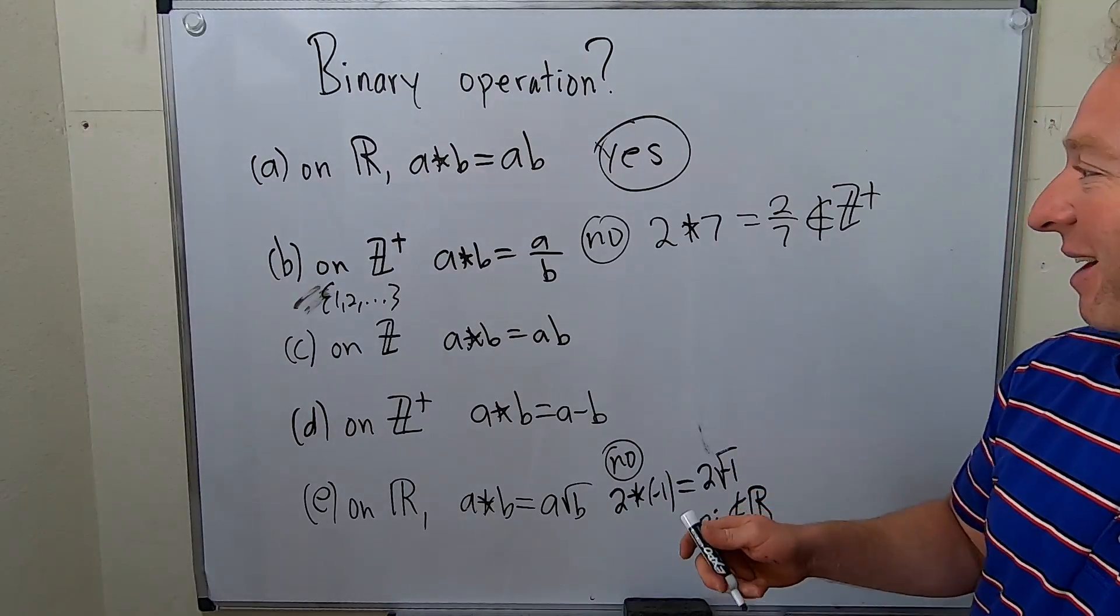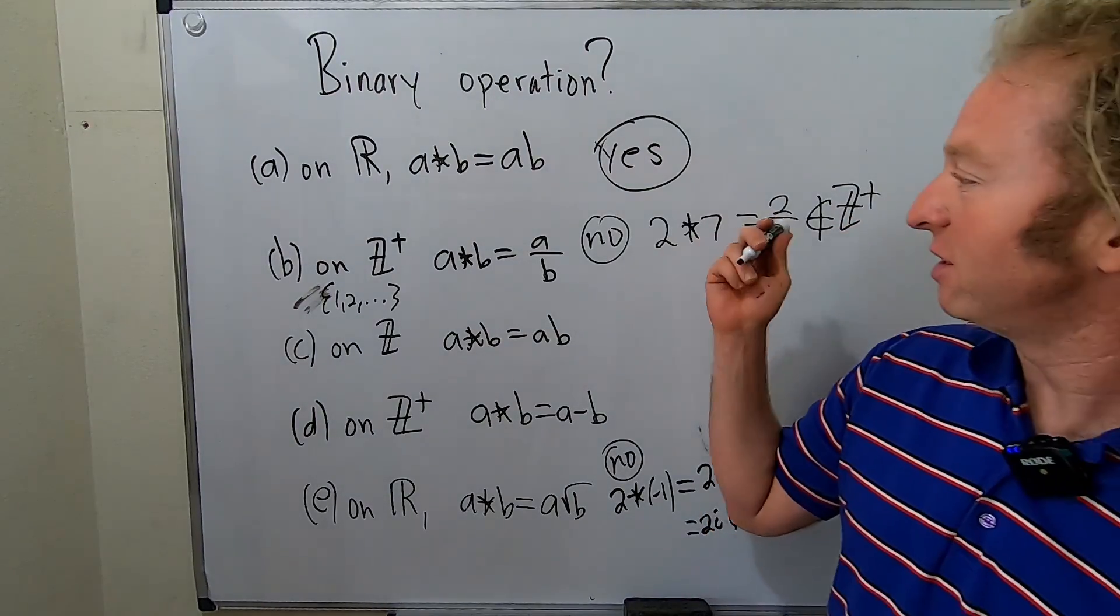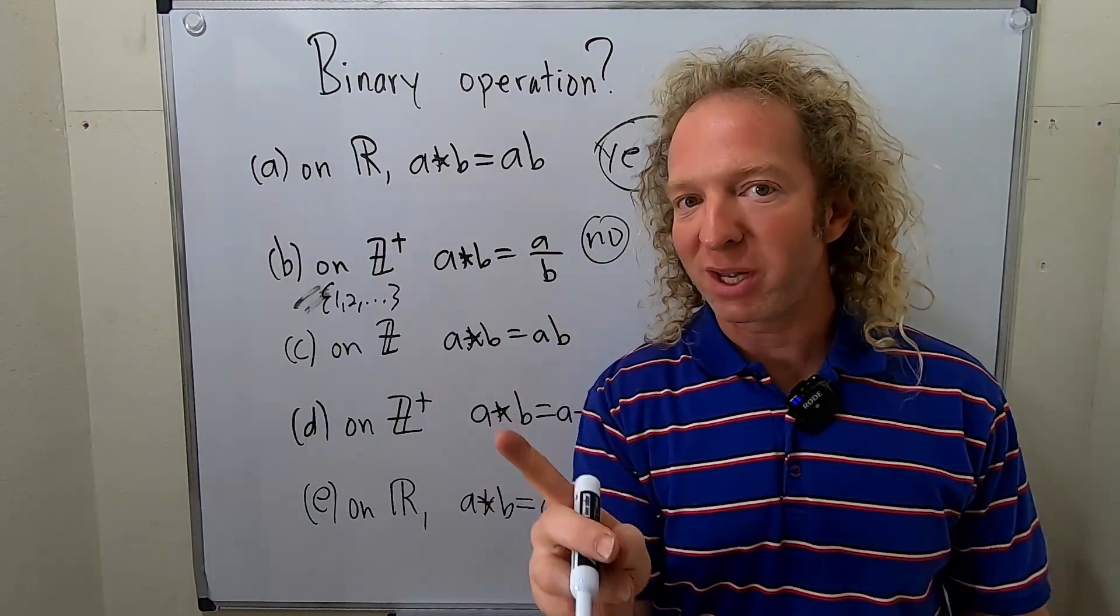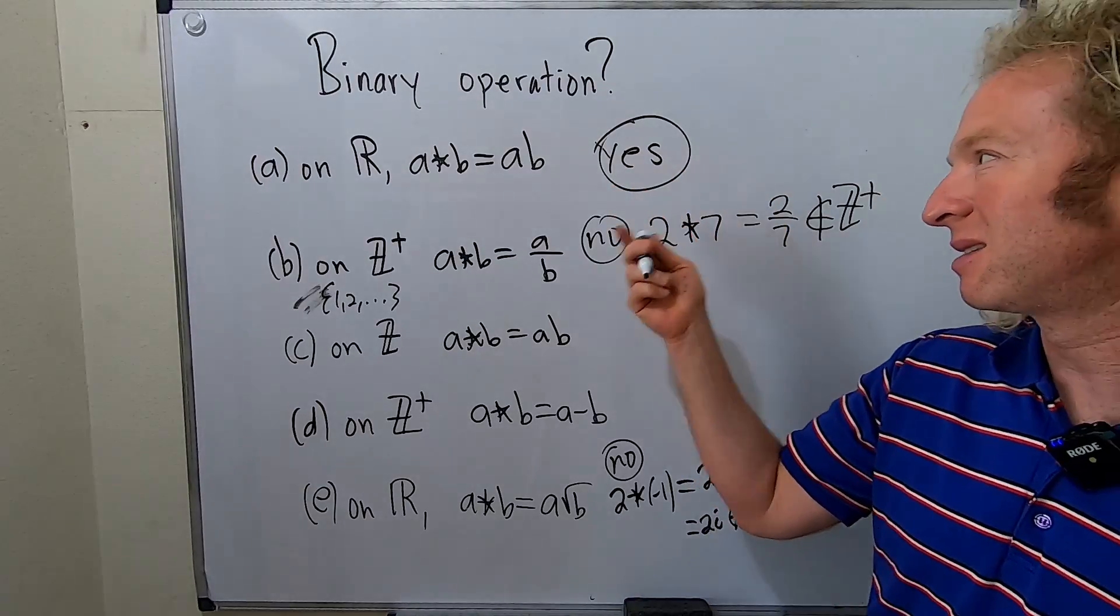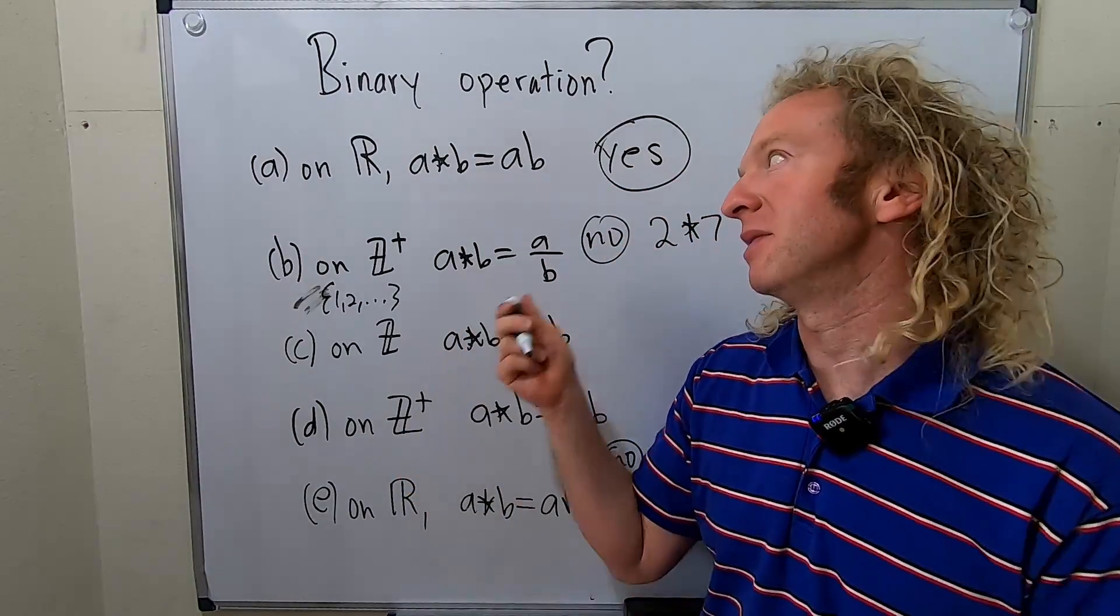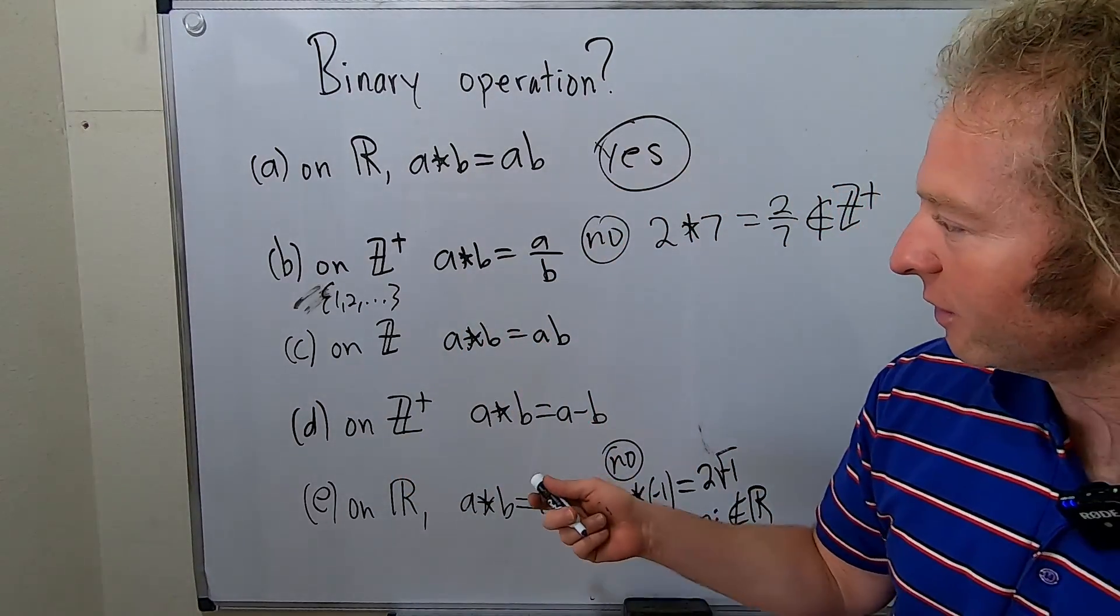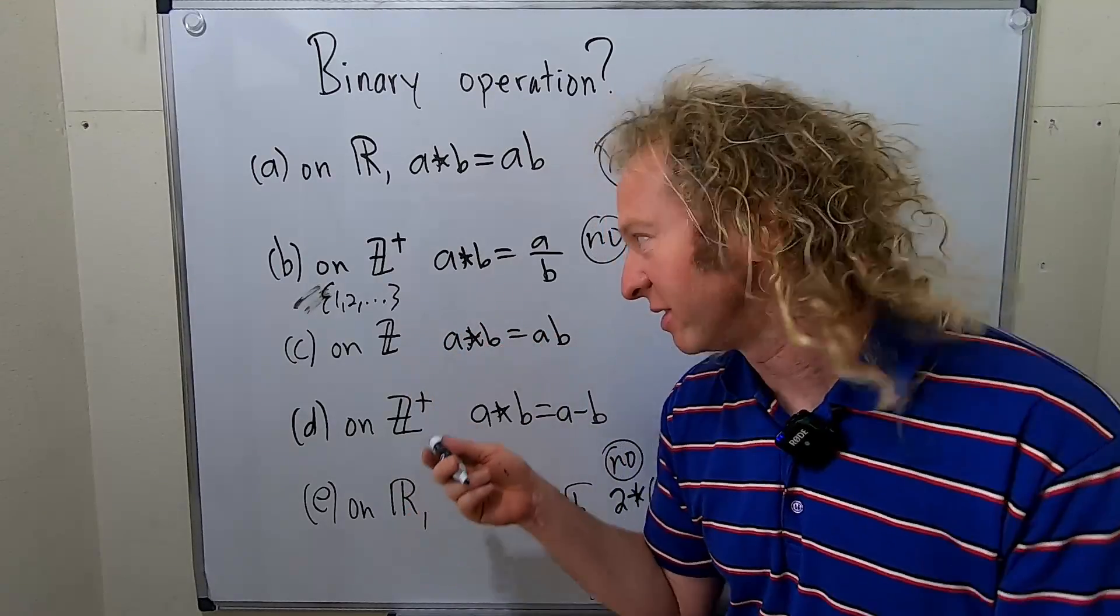So you have to really think. Again, all you have to do to say no is just come up with one example where it fails. In order to say yes, usually it's pretty obvious when it's yes. Like, oh yeah, it makes sense. How about this one? Here's an example of obviousness.